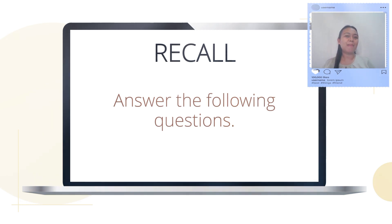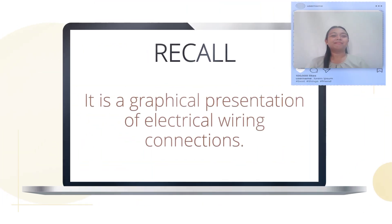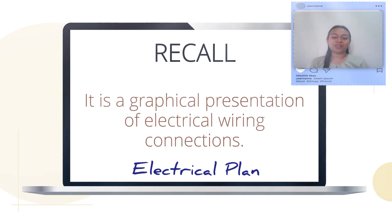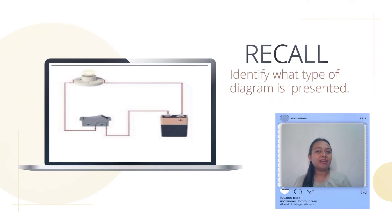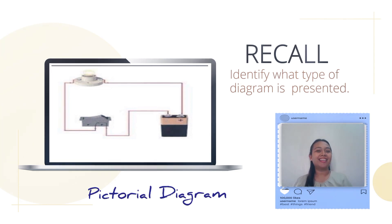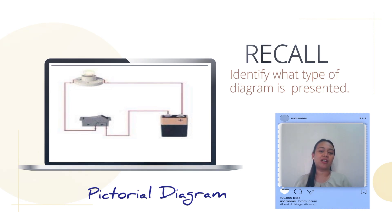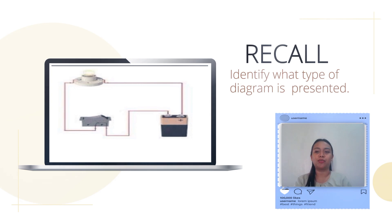Before we formally move on to our Week 6 in TLE, let's have a recap activity. First question: it is a graphical presentation of electrical wiring connections — the answer is electrical plan. Next, identify what type of diagram is presented. This is a pictorial diagram. The pictorial diagram is a sketch showing the actual appearance of electrical components, much like a photograph.